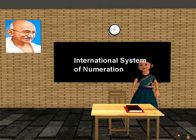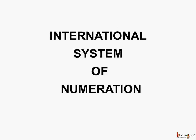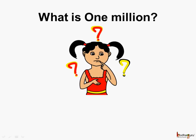Good morning children, today we shall learn about the international system of numeration, or the international numeral system. Here is a boy who says my father bought this house for six million rupees. So what is one million?